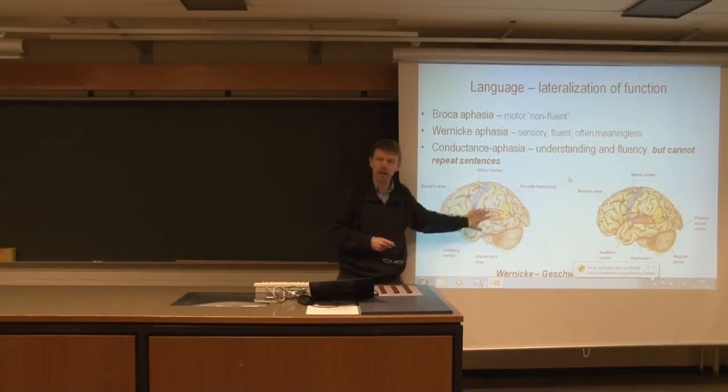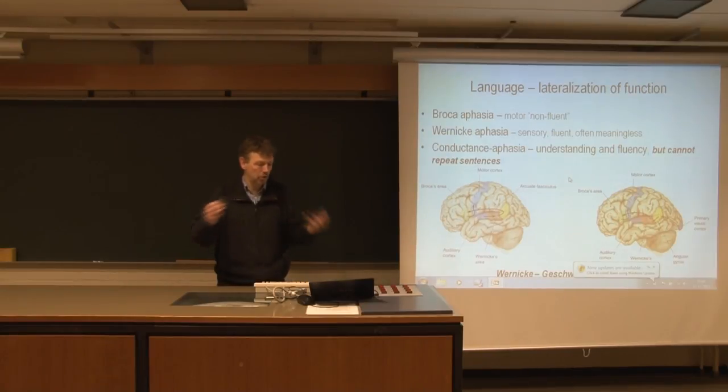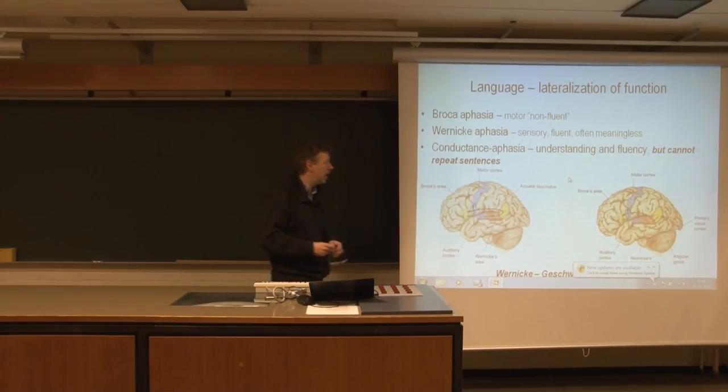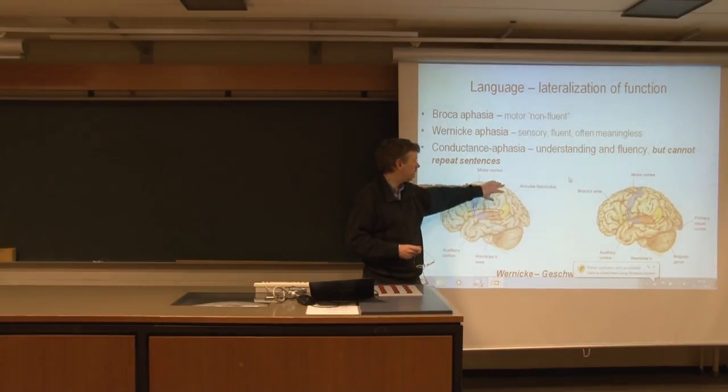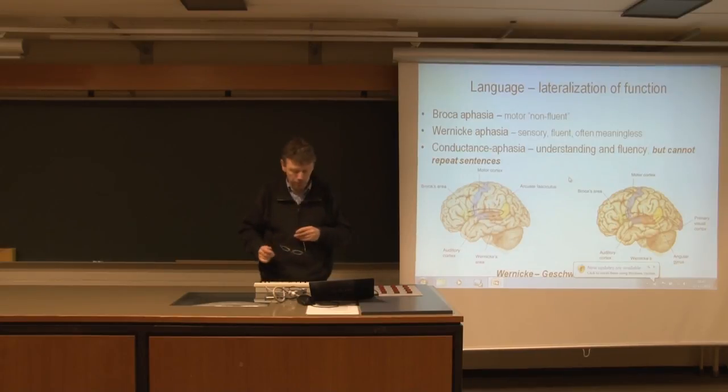So that organization is quite similar to what we also see in the case of control of our limbs, that we have the parietal areas, where we have area 5 and area 7, which feeds into the premotor cortex, and then into the primary motor cortex, and then we can produce movement.